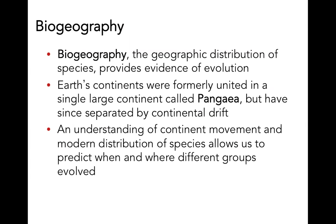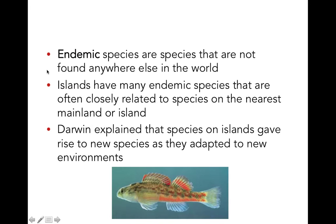Biogeography — the geographic distribution of species — is another line of evidence for evolution. Why do we see similar species within similar habitats or on the same land mass? It suggests common ancestry. It is hypothesized that the earth's continents were once a single large continent called Pangea, and have since separated by continental drift, a theory that underpins modern geology. As the continents spread apart, species were distributed and evolution drove them to adapt to particular habitats.